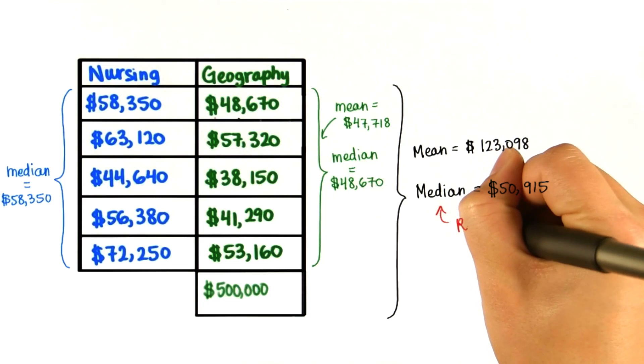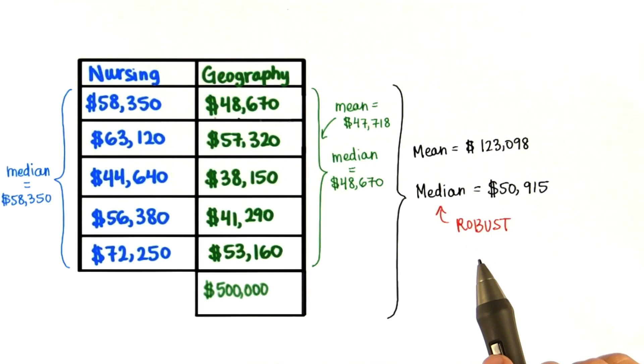This tendency of the median is called robust. In everyday language, robust means strong and sturdy, which makes sense for its statistical definition. It's not affected much by departures from the norm.